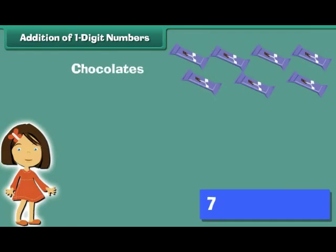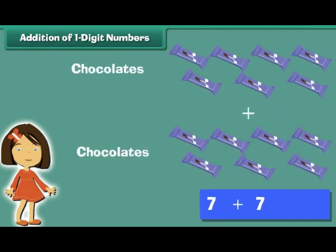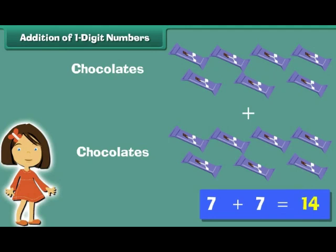Meeta has 7 chocolates. She buys 7 more. How many chocolates does she have in all? 7 plus 7 is equal to 14. Meeta has 14 chocolates.